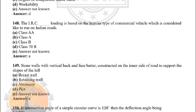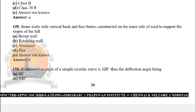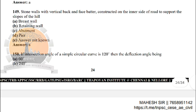Next: IRC loading is based on the heavier type of commercial vehicle considered likely to run on Indian roads — the correct answer is option A: Class AAA. Next: stone walls with vertical back and fire pattern constructed on the inner side of the road to support the slope of the hill — the correct answer is option A: breast wall.